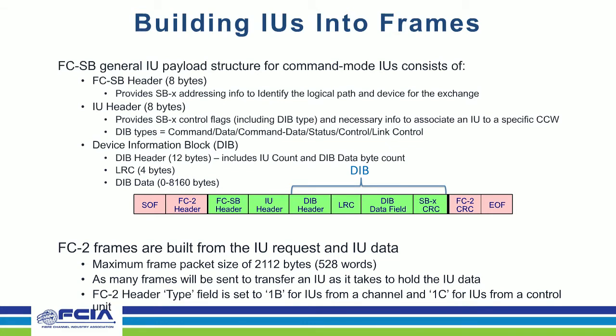Frames have a maximum size of 2112 bytes. An IU could have up to 8K of data, so it may take multiple frames to transfer one IU. Once the IU is built, the FC2 layer decomposes it into frames, and the FC2 CRC is added to protect each individual frame. The FC2 CRC is just for transporting from point A to point B; the SBCRC protects the entire data stream of the IU; and the LRC protects the decomposition of the IU header information and data field. These three checks play different roles in ensuring integrity at multiple levels.